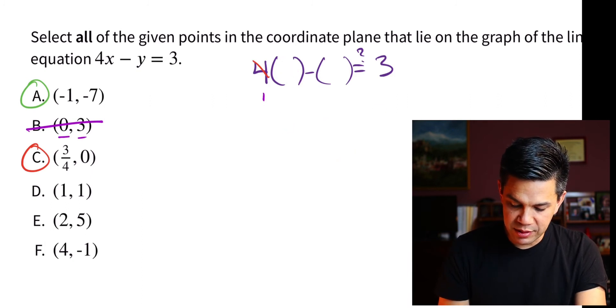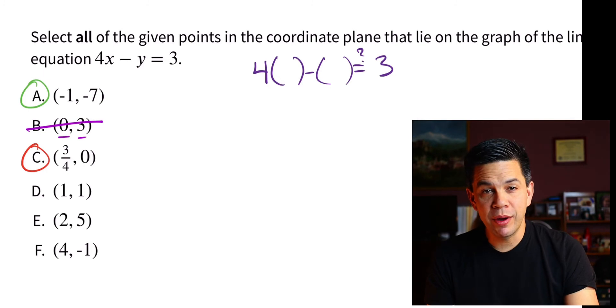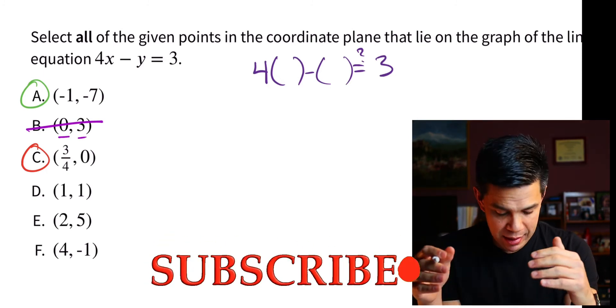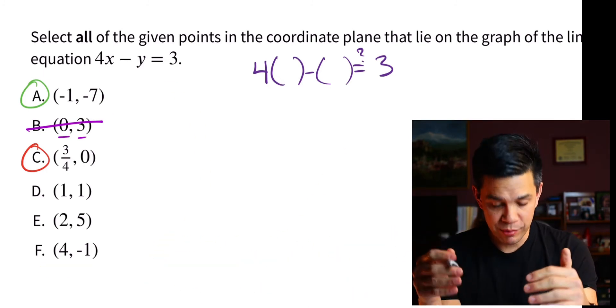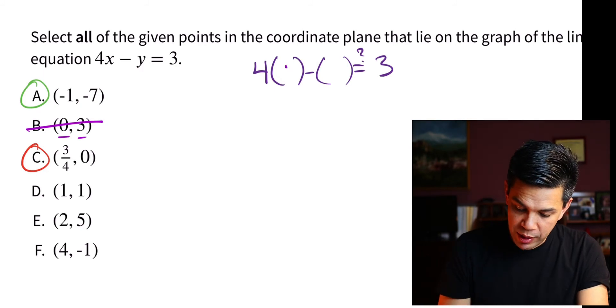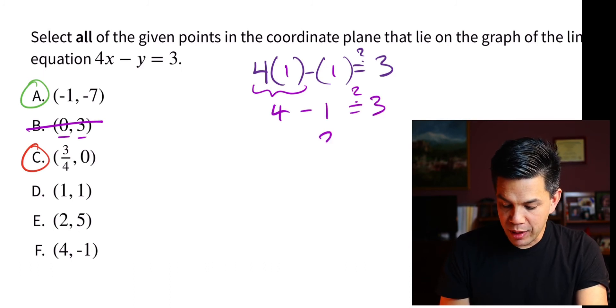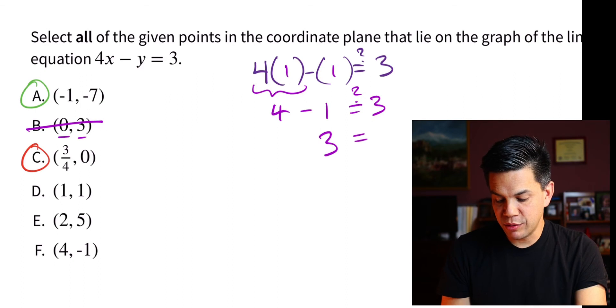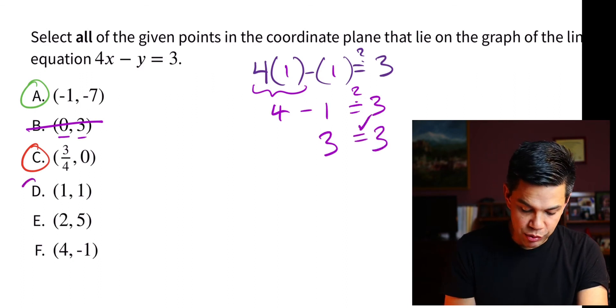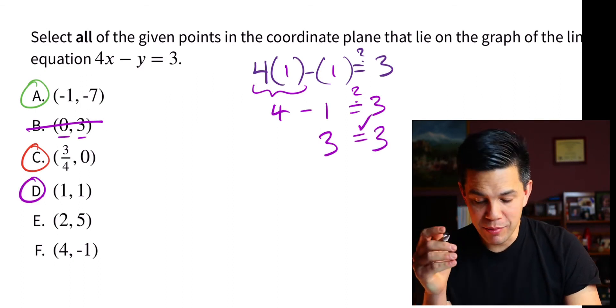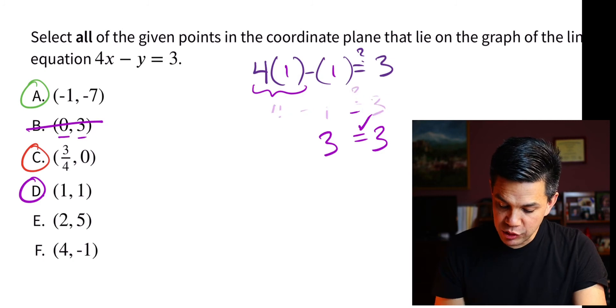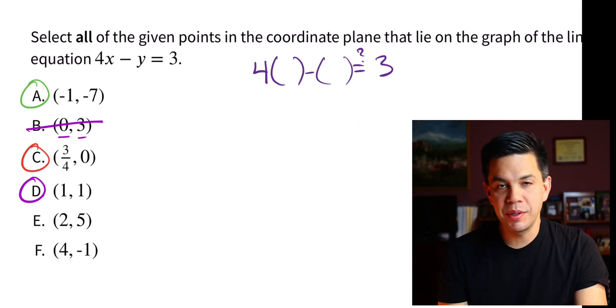All right, moving right along. This is great. Hey, we're doing great here. I hope you're getting the hang of this. Go ahead and follow along with me. Do some practice here. We're just dropping in our ones here. 4 times 1 is 4 minus 1. Does that equal 3? Well, indeed, 4 minus 1 is 3 and 3 does equal 3. We have another match. We have another match. We have another solution to our linear equation. We have another point that will appear on the line.